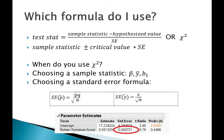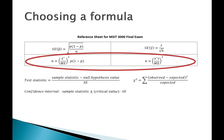Standard error formulas for p-hat and y-bar are given on your reference sheet. For the standard error of the slope, that comes from the output. There are also formulas starting with 'n equals' for calculating the necessary sample size — used when given a margin of error and asked how large the sample should be. The formula on the left is for categorical data and the one on the right is for quantitative data.